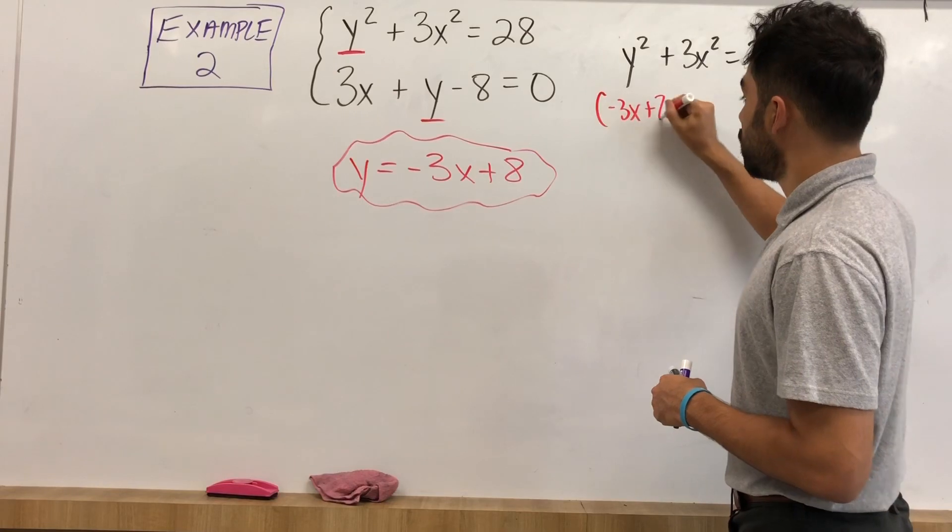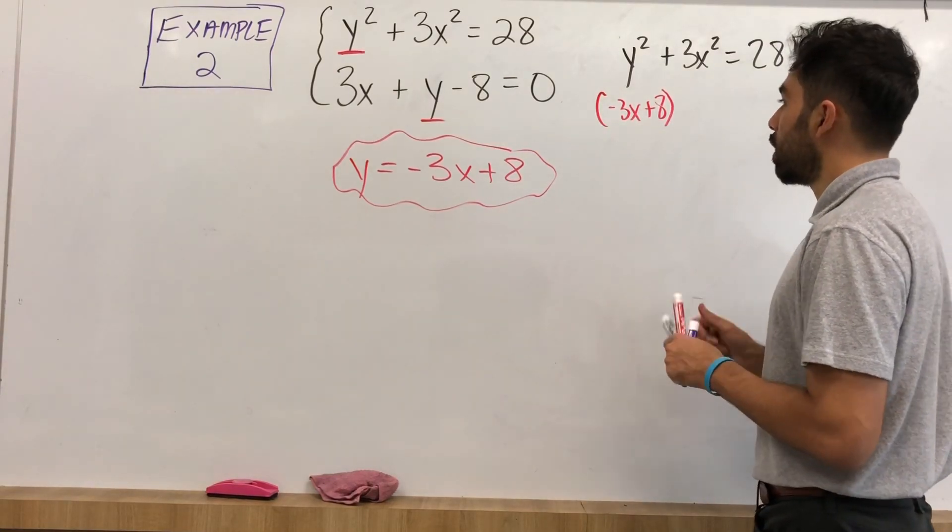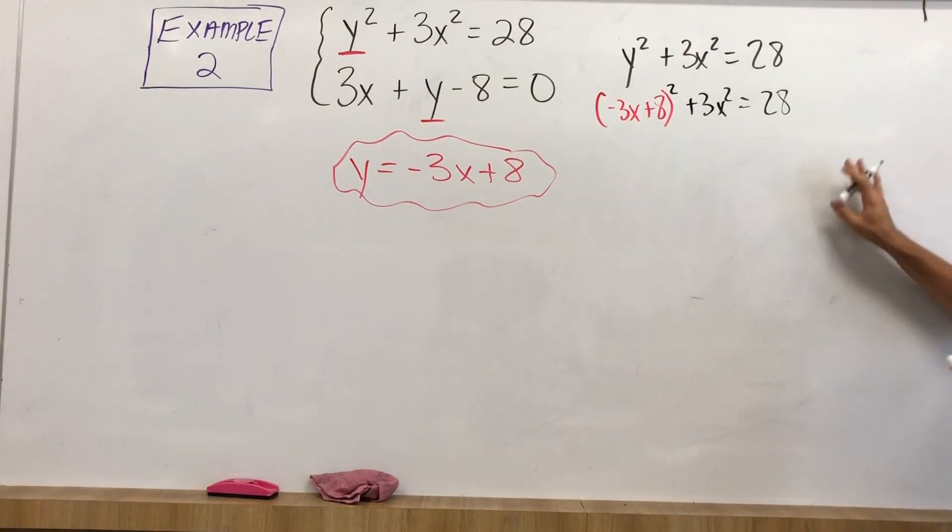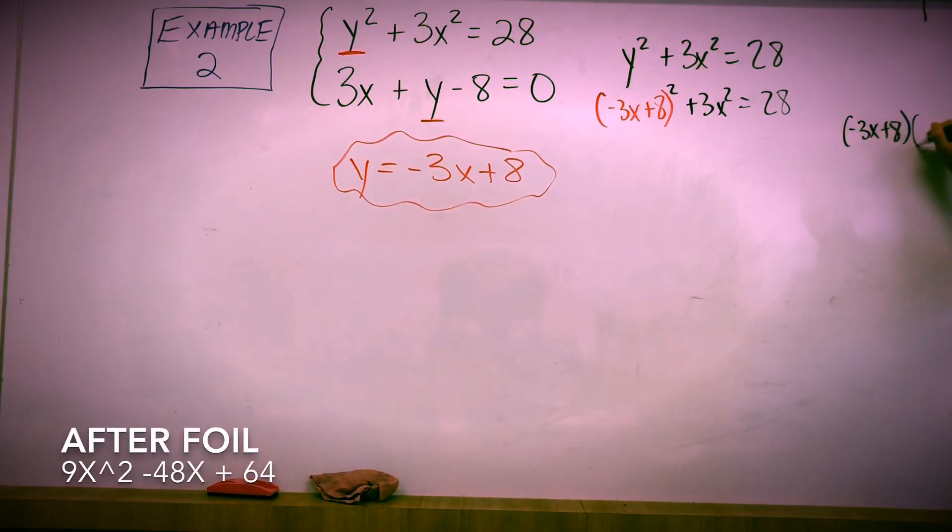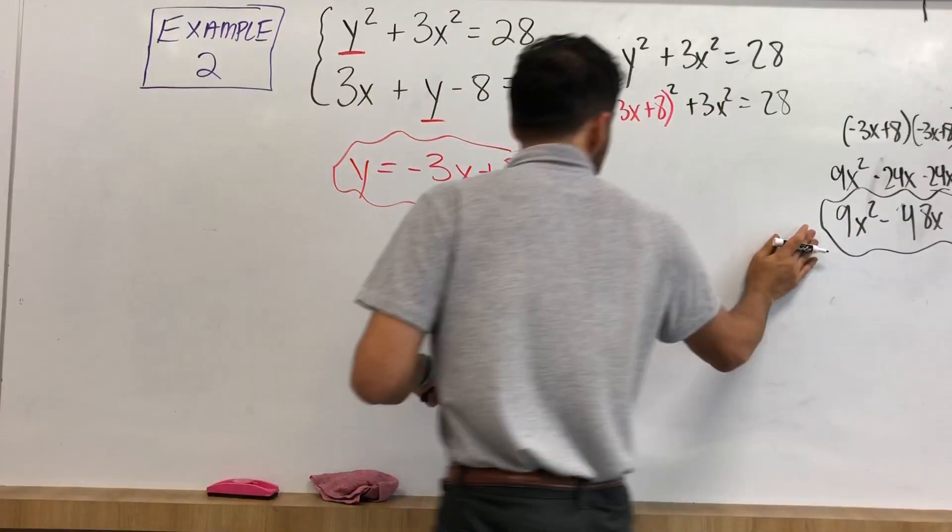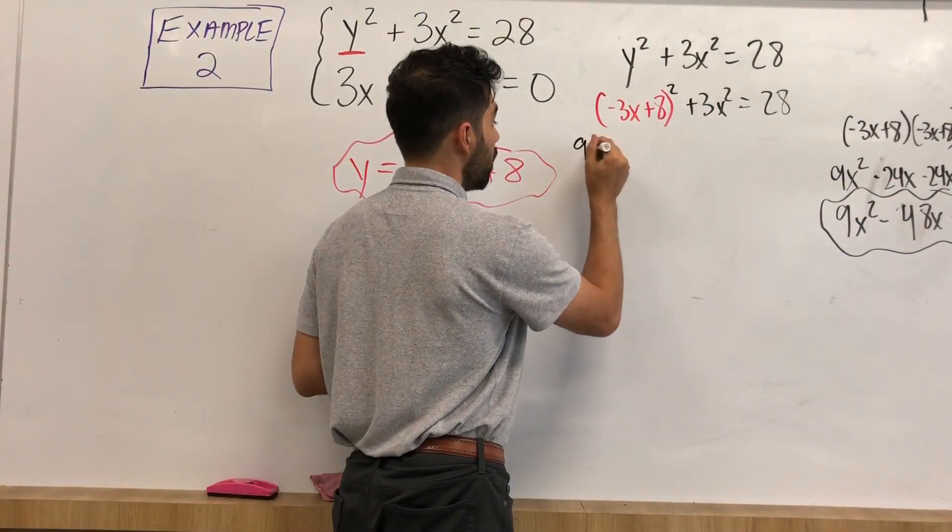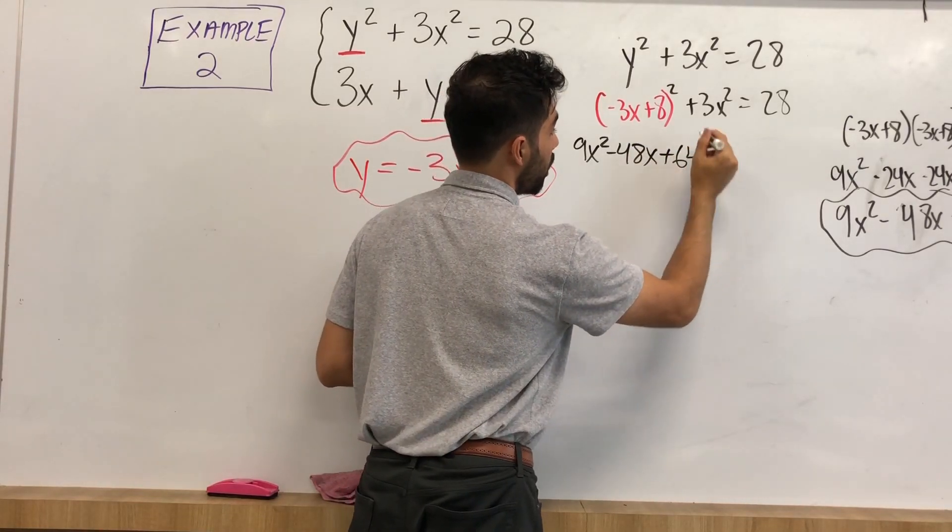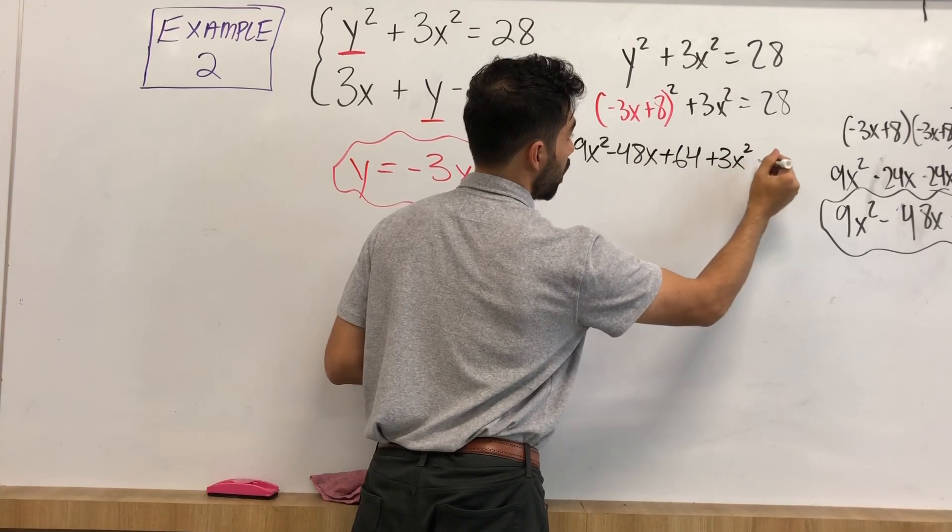Again, as you can see, we will be foiling this again. So again, if you're having trouble foiling, I will do it one more time just off to the side. So first, negative 3x, negative 3x. Inside, negative 24x. Outside, negative 24x. And last, 64. We can simplify here. 9x squared, negative 48x plus 64. So that is equivalent to 9x squared, negative 48x, plus 64, and then plus 3x squared is equal to 28.